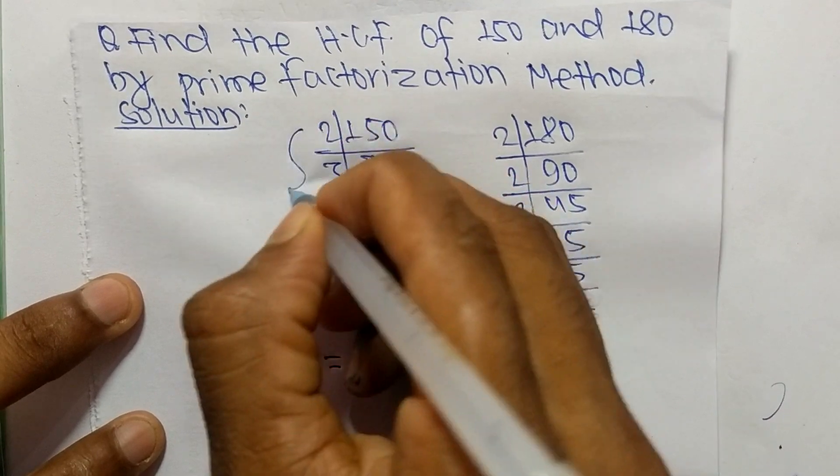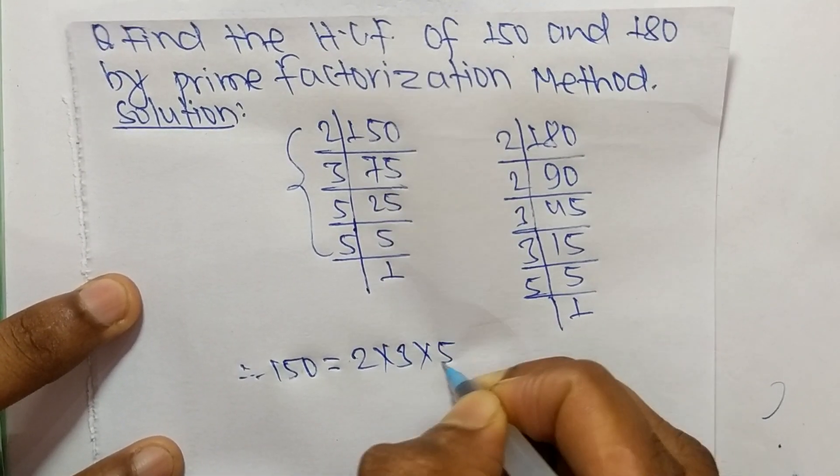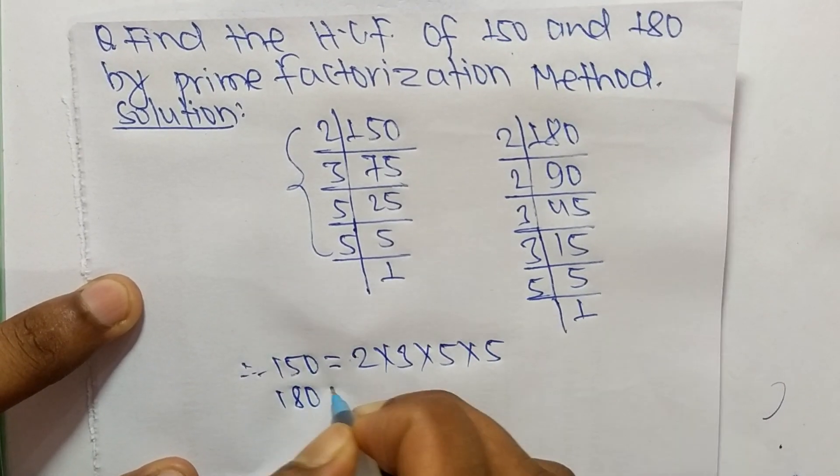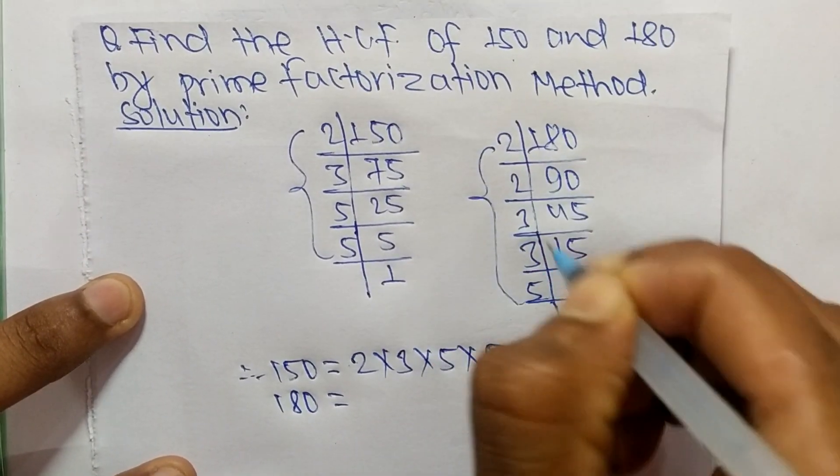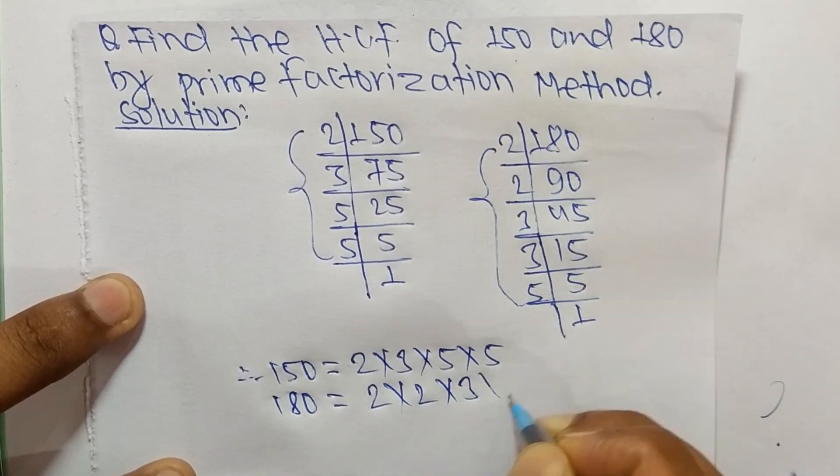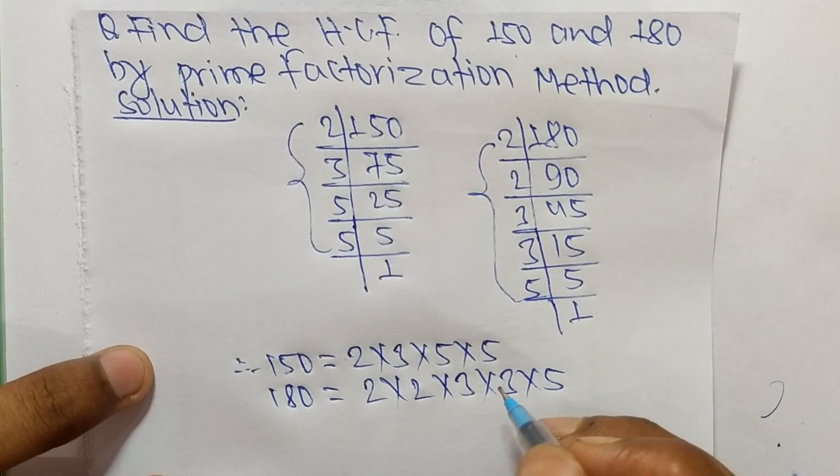From these prime factors, we can write 150 equals 2 times 3 times 5 times 5, and 180 equals 2 times 2 times 3 times 3 times 5.